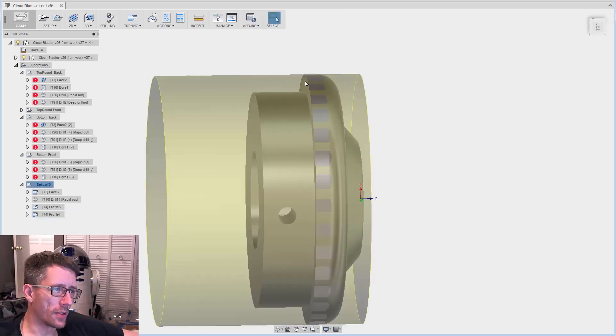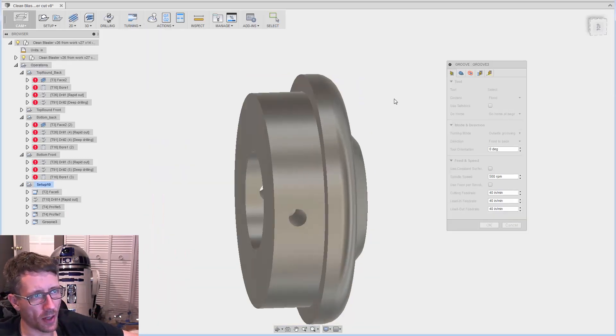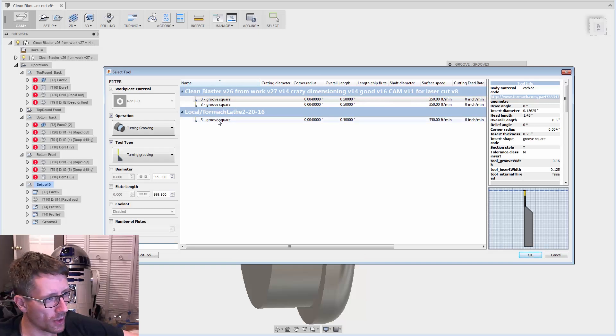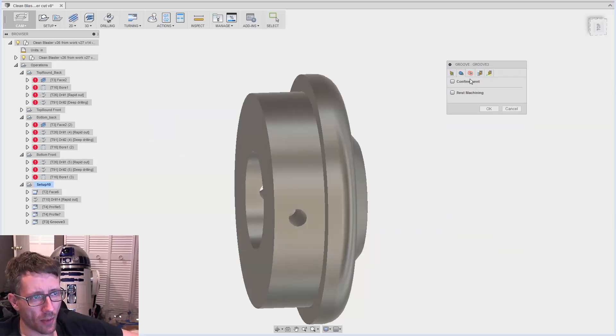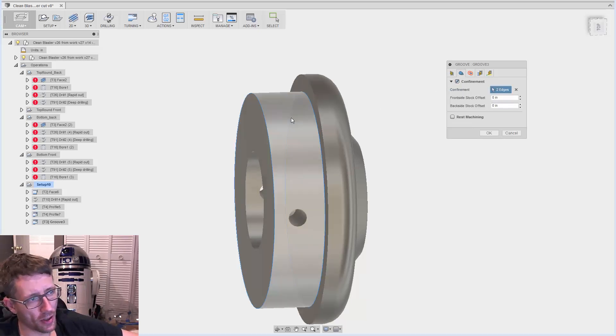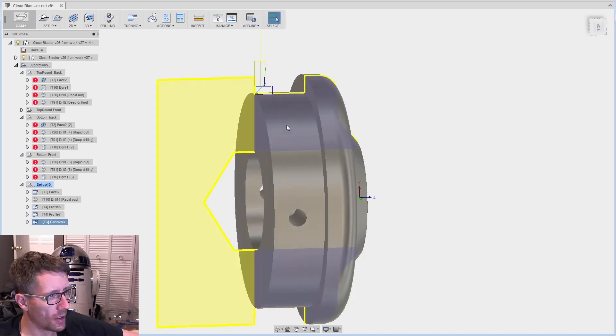Now we've got to create this groove here. I'll do that with, you guessed it, grooving. Under turning groove, first let's pick the tool and set our speeds. This time we're going to pick a confinement. What that allows you to do is you choose two features and then turn that on, and it's only going to mill between those features.